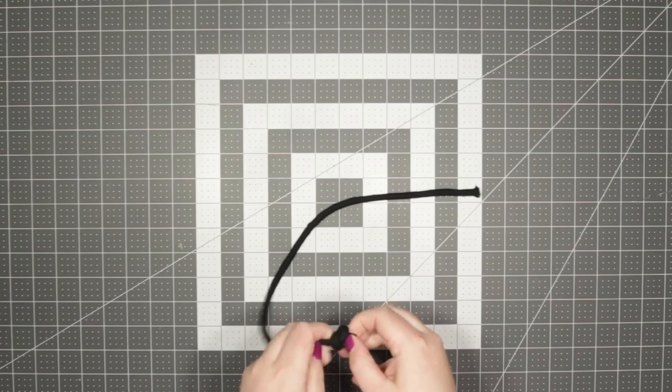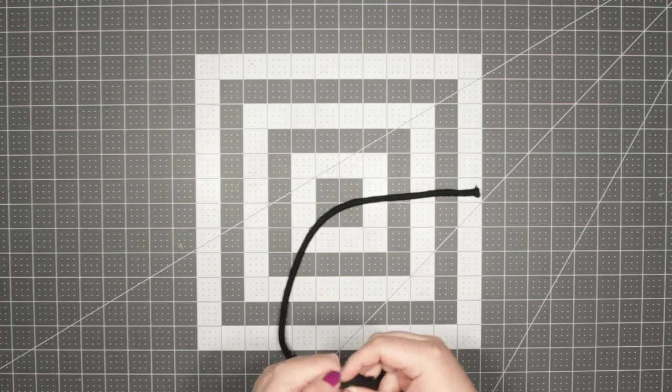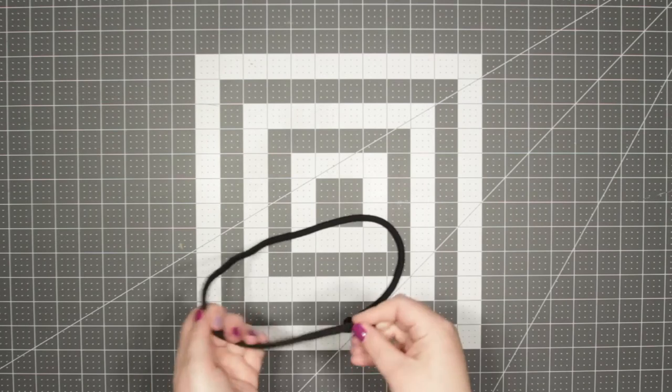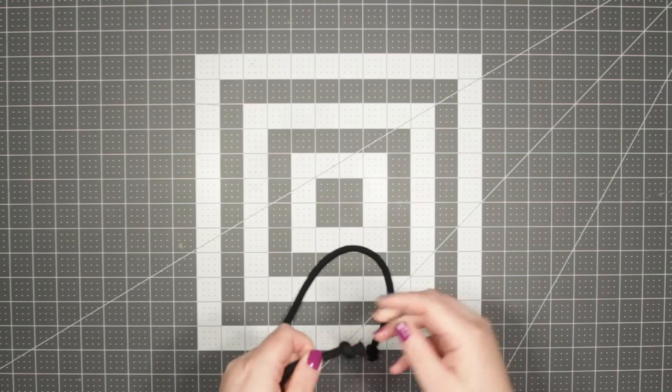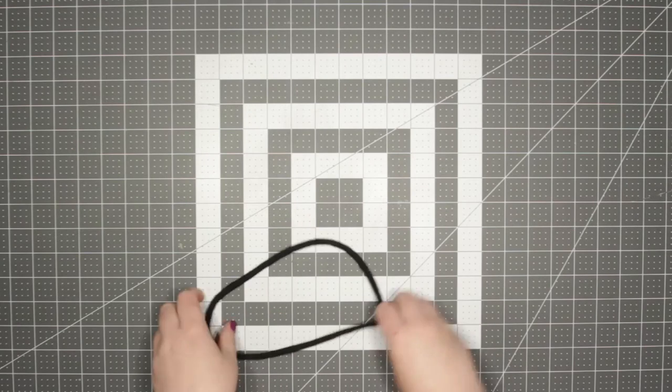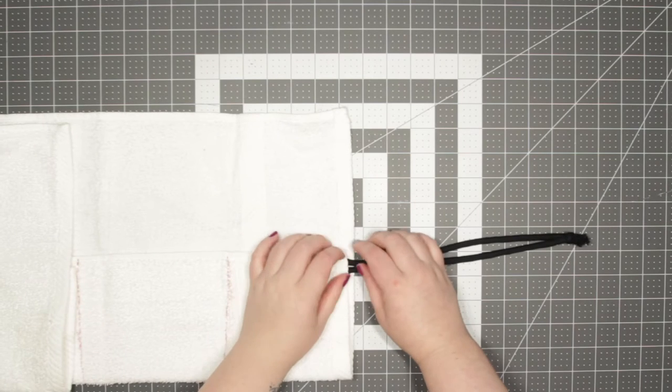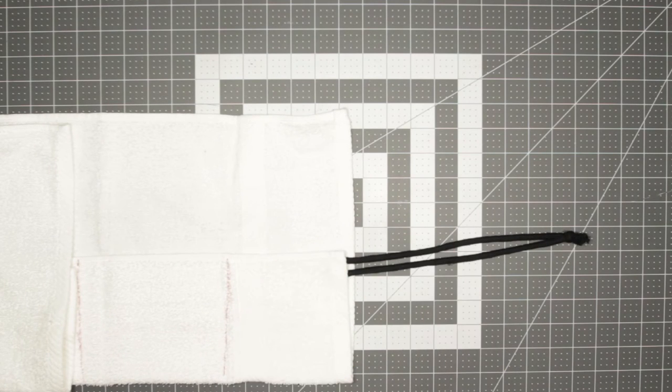Tie a knot at each of the ends so that they don't fray. Pin your cord into place at one end of your roll and pin any place else that you feel that you need.